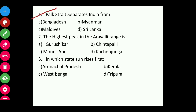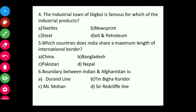Quiz questions: One — Palk Strait separates India from Sri Lanka. Two — the highest peak in the Aravalli Range is Gurushikhar. Three — in which state does the sun rise first? The answer is Arunachal Pradesh. Four — the industrial town of Digboi is famous for oil and petroleum.